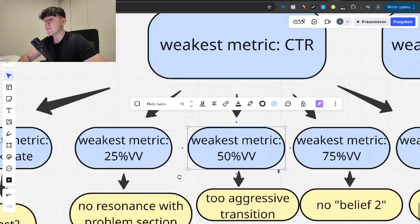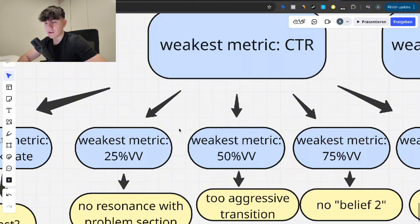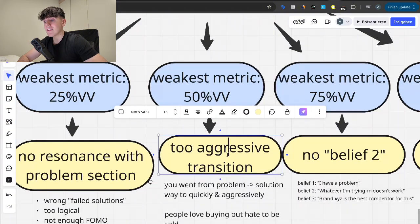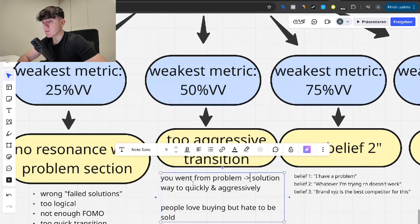But if the 25% video views was super bad, that means there's no one really resonating with that exact section where we want to twist the knife. Meaning we've talked about the wrong fail solutions. We were way too logical and not emotional enough. We didn't have enough fear of missing out that we created and we had a too quick transition. So you want to always make a very smooth transition from every section to the next. People love buying, but hate to be sold. Keep that in mind.